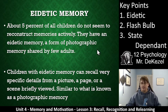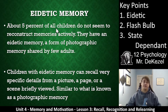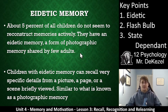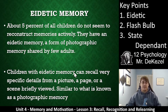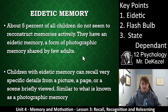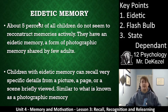Key point one is eidetic memory, which you may have heard of as photographic memory. About 5% of children do not actively reconstruct memories; instead, they have an eidetic memory — essentially a photograph of what they've seen. We call it photographic memory, and while it is shared by a few adults, many children lose this ability as they grow up. Children with eidetic memories can recall very specific details from a picture, page, or briefly viewed scene — details that people without this memory type would never be able to remember. So eidetic essentially means photographic memory.